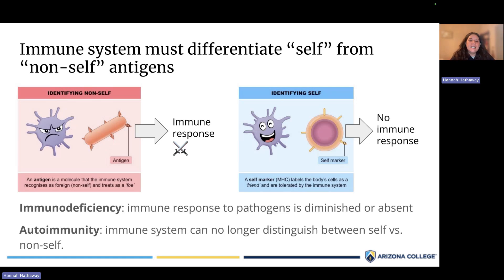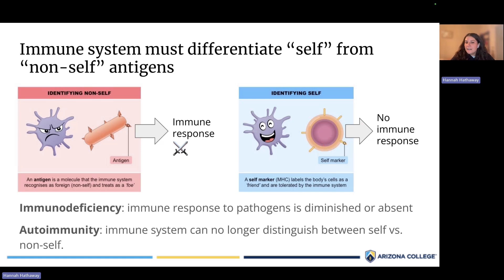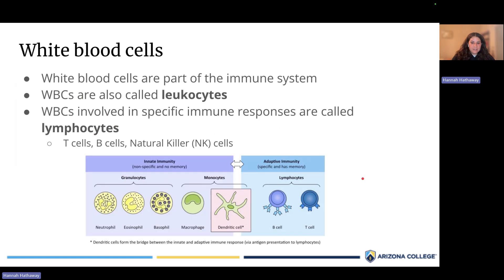The flip side of that is autoimmunity. In autoimmunity, the immune system is almost working overtime — it's recognizing self-antigens as non-self, so that part of the balance is dysregulated. In an autoimmune disease, the immune system is mistakenly recognizing self-antigens as harmful and then attacking and destroying them. That's a basic reminder of the immune system's function.